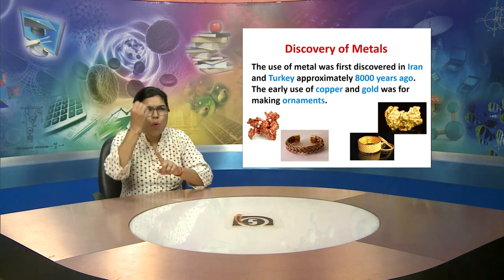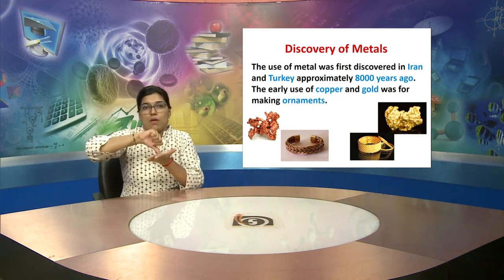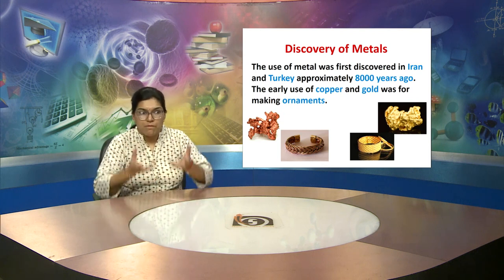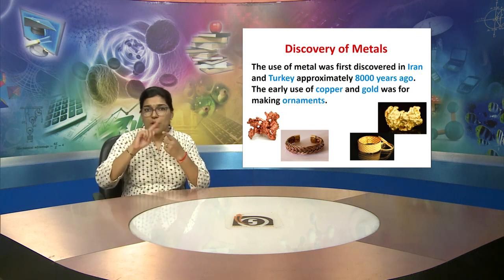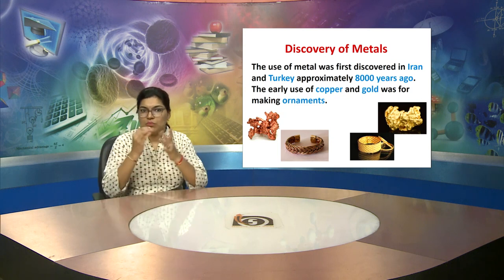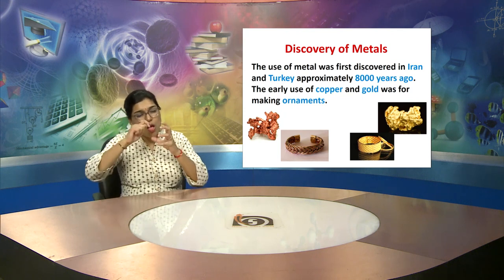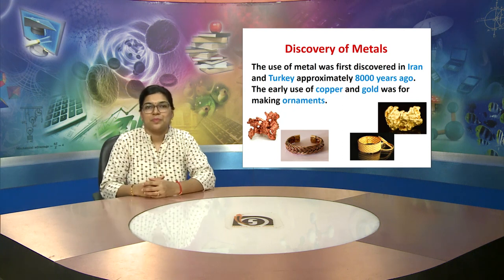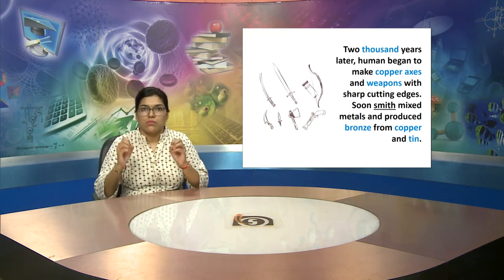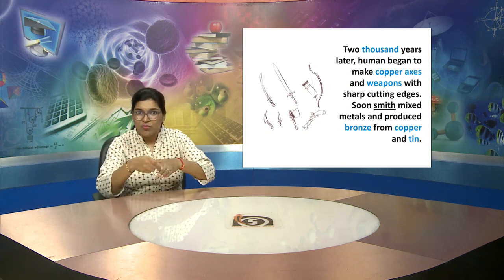Now we will discuss the discovery of metals. The use of metal was first discovered in Iran and Turkey approximately 8,000 years ago. The early use of copper and gold was for making ornaments only — you can see on screen that these metal items were found as ornaments. Then, 2,000 years later, humans began to make copper axes and weapons with sharp cutting edges.